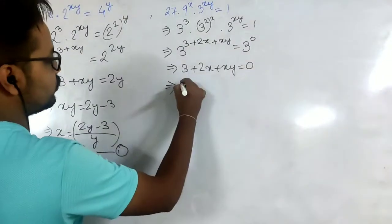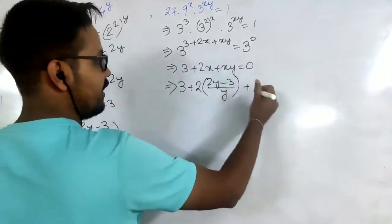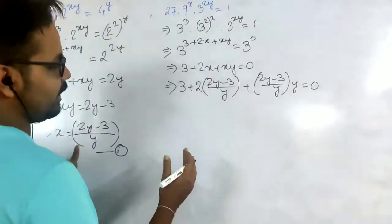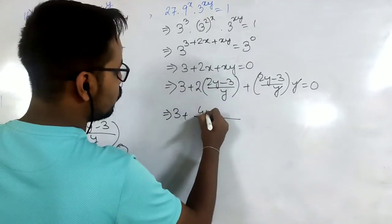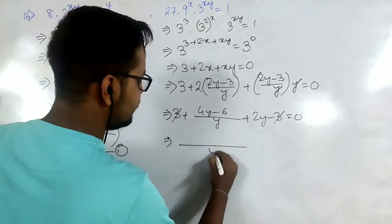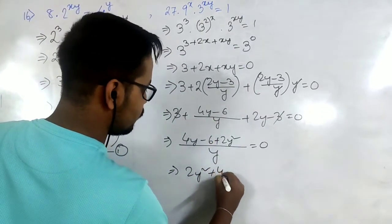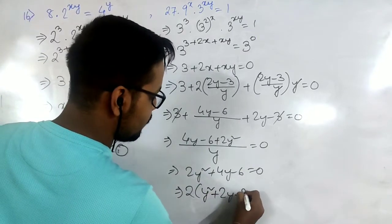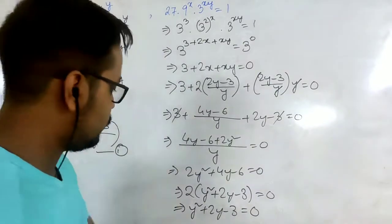Now we put the value of x, which is (2y - 3)/y, into this equation. So it is 3 + 2·((2y - 3)/y) + ((2y - 3)/y)·y = 0. The y's cancel from the last term, giving us 3 + (4y - 6)/y + (2y - 3) = 0. The 3 and -3 cancel, and taking LCM as y we get 4y - 6 + 2y² = 0, which simplifies to 2y² + 4y - 6 = 0. Dividing by 2 gives y² + 2y - 3 = 0.